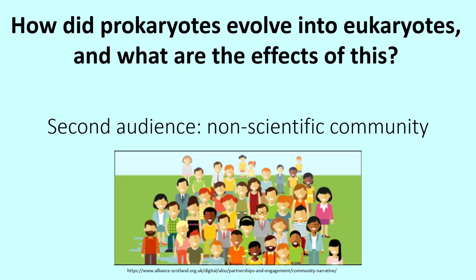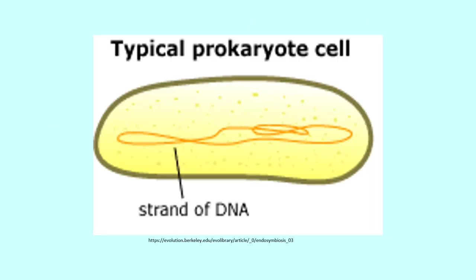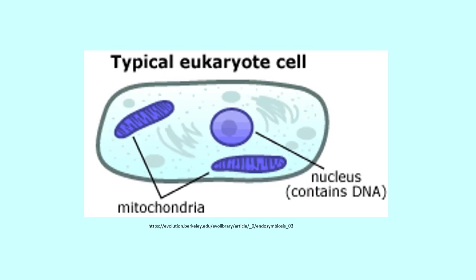Today we will be discussing the transformation of prokaryotes to eukaryotes. A prokaryote is a single-cell organism that includes things like bacteria. A eukaryote has the DNA or genetic information and chromosomes in a thing called the nucleus. Eukaryotes are all of the other living things besides bacteria.